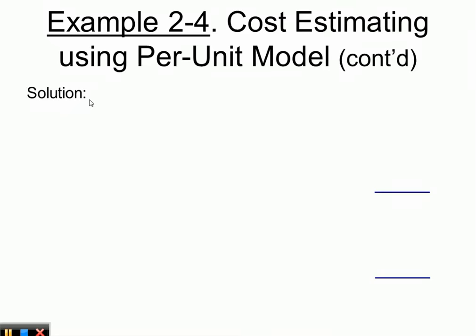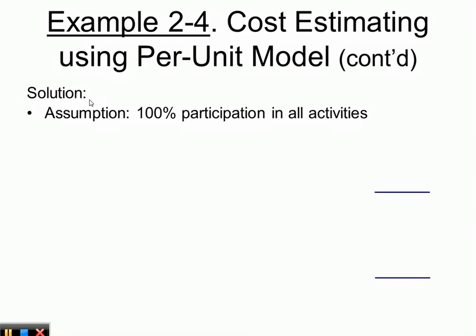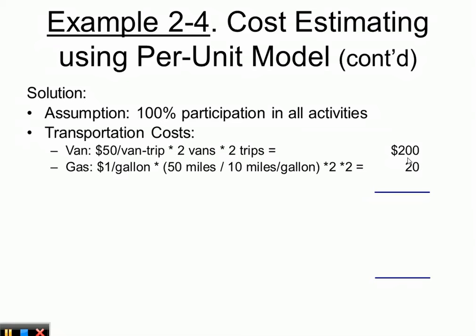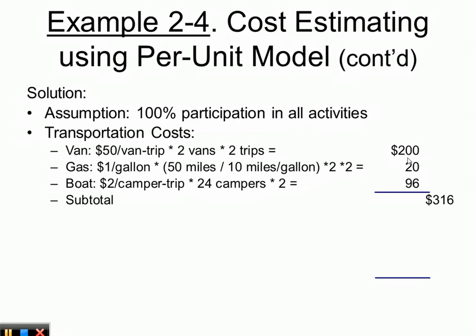Assuming 100% participation of all 24 students, here are the transportation costs. We need two vans because one van can only fit 15 students, and two trips for a round trip — so 2 vans × 2 trips × $50 = $200 for van rental. For gas: $1 per gallon × 50 miles ÷ 10 mpg × 2 vans × 2 trips = $20. For boat: $2 per camper × 24 campers × 2 trips = $96. Transportation subtotal is acceptable.